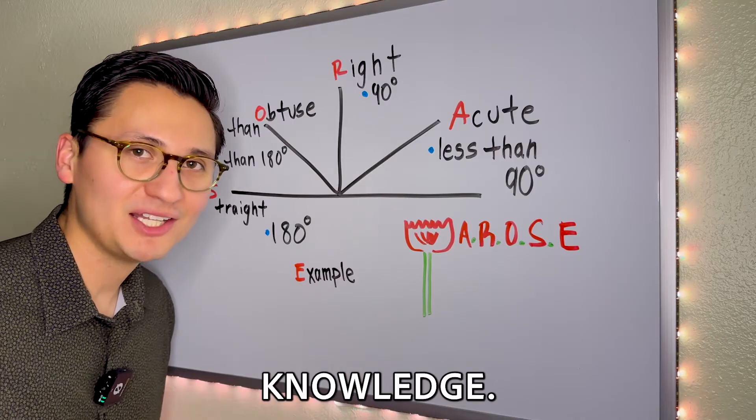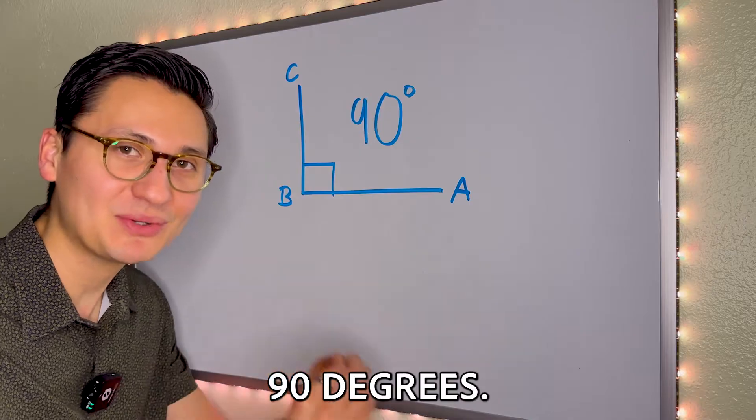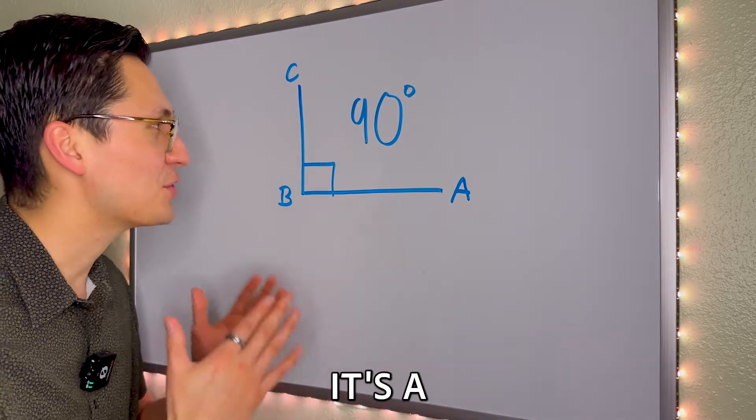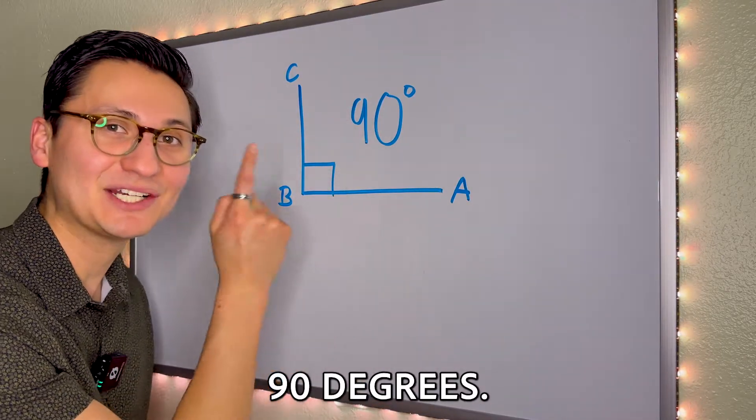Now let me test your knowledge. So if I show you an angle that looks like this, it is exactly 90 degrees. What angle would this be? You're right. It's a right angle because right angles equal exactly 90 degrees.